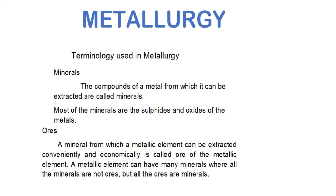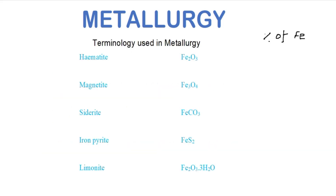Based on the availability and the percentage of metal in a compound or mineral, it can be considered as an ore. For example, the minerals of iron are given here. In hematite (Fe₂O₃), the percentage of iron is 69.94%, where 111.7 is the weight of iron and 159.7 is the molecular weight of ferric oxide.